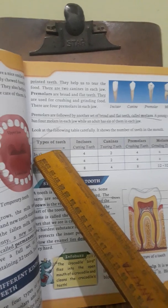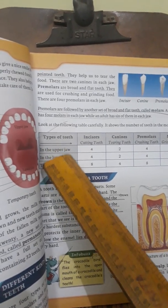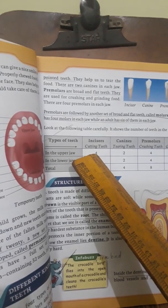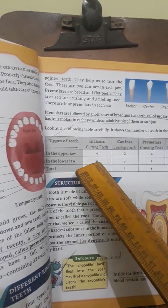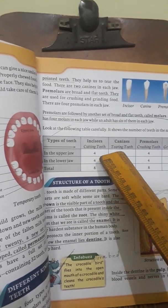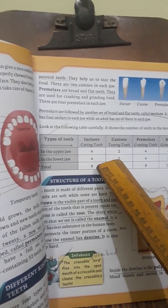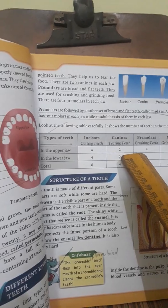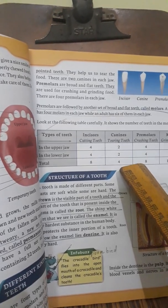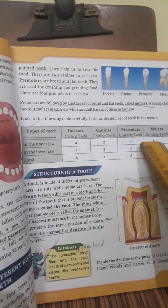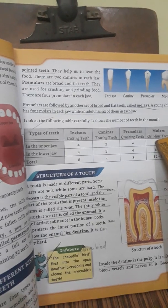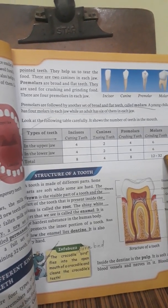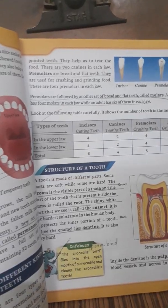Looking at the tooth count: incisors — four in the upper jaw, four in the lower jaw, total eight. Canines — two in the upper jaw, two in the lower jaw, total four. Premolars — four in the upper jaw, four in the lower jaw, total eight. Molars — six in the upper jaw, six in the lower jaw, total twelve. So the total number of permanent teeth is 32.